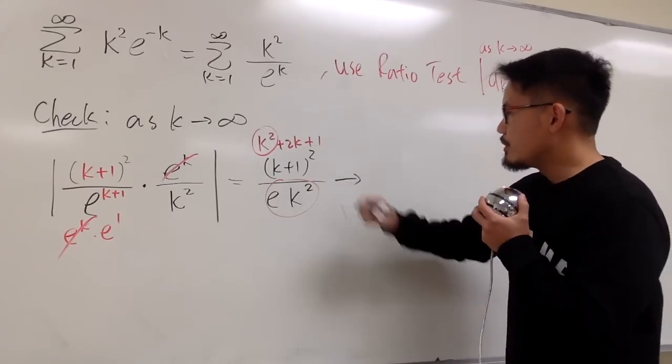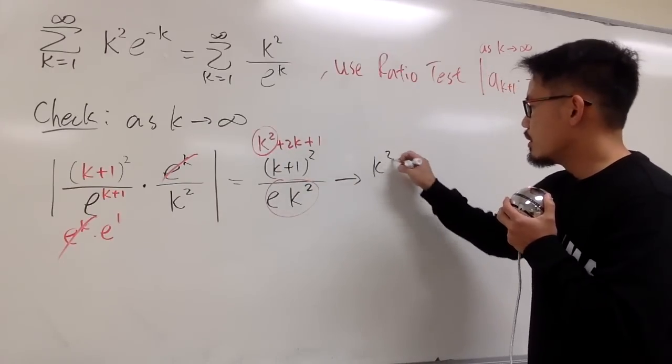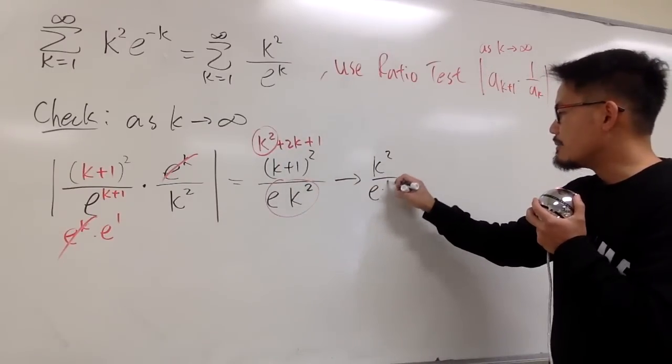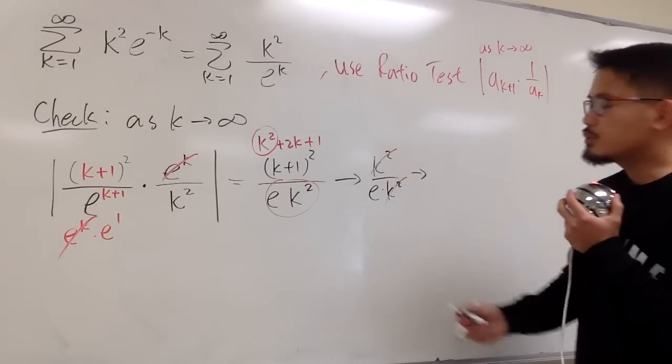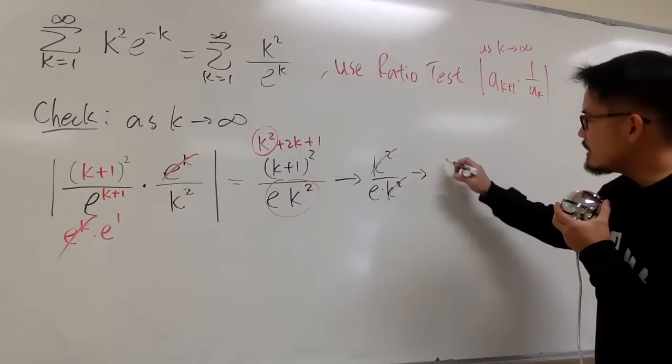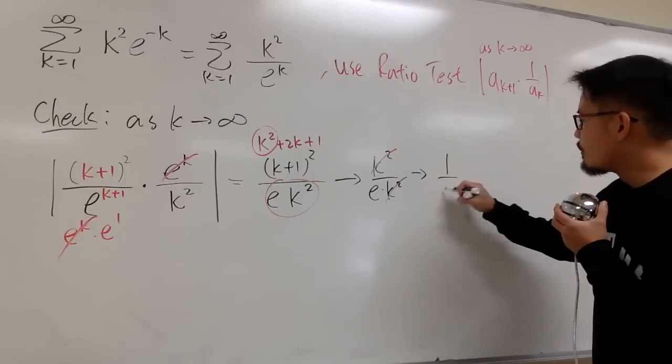times k squared. So you put them together into consideration. This is going to approach k squared over e times k squared. And as you can see, k squared, k squared will cancel. So finally, the limit is just 1 over e.